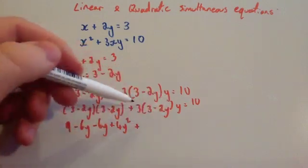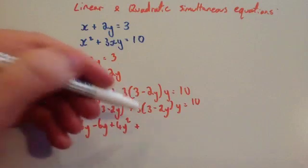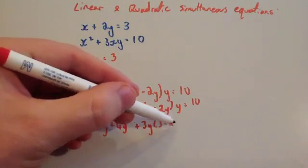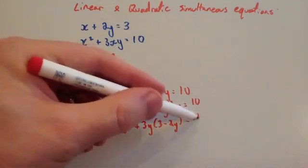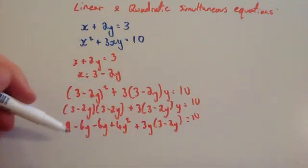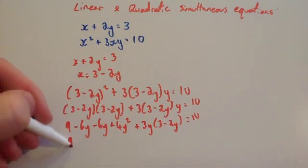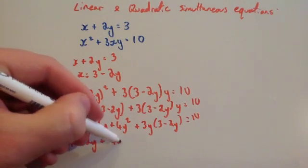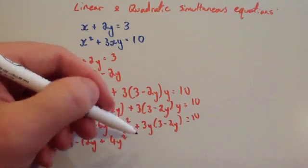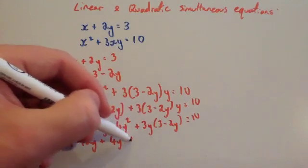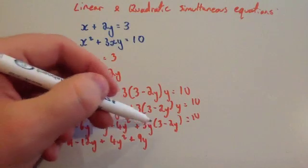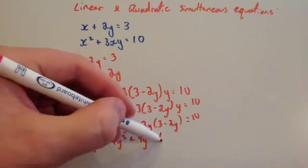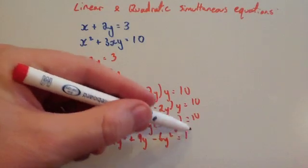I'm just going to rearrange before expanding — bring the y beside the 3, so 3y times (3 minus 2y) equals 10. Simplifying gives 9 minus 12y plus 4y squared. Then expanding: 3y times 3 is plus 9y, and 3y times minus 2y is minus 6y squared, equals 10.